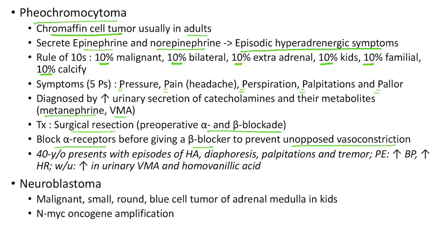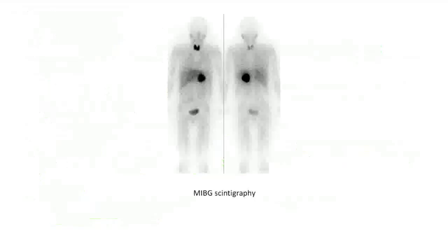Clinical case of pheochromocytoma: A 40-year-old presents with episodes of headache, diaphoresis, palpitations and tremor. Physical examination shows elevated blood pressure and heart rate. Workup shows increase in urinary vanillylmandelic acid and homovanillic acid — a classic case of pheochromocytoma. Neuroblastoma is a malignant small round blue cell tumor of the adrenal medulla in kids, associated with N-MYC oncogene amplification. This picture shows MIBG scintigraphy of pheochromocytoma.